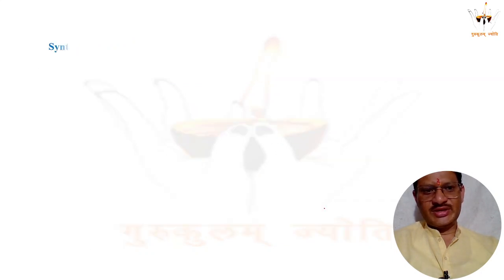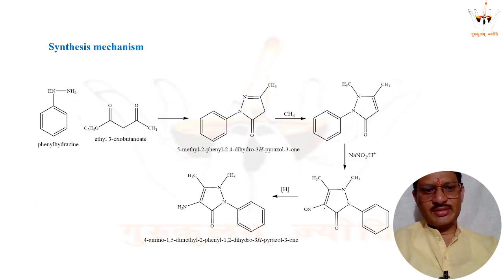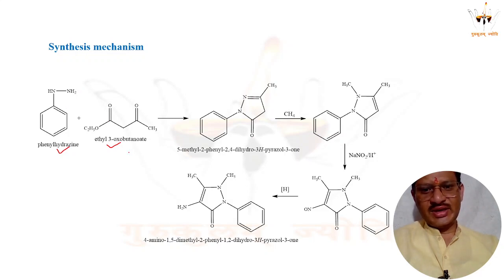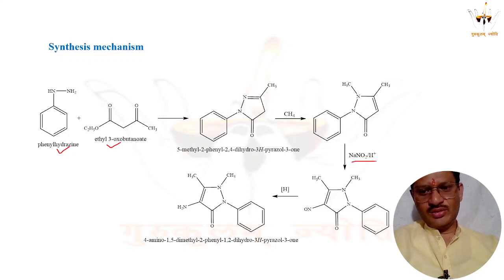Now we will synthesize metamizole. For the synthesis, the first step requires formation of a pyrazoline ring. Two nitrogen-containing reactants undergo cyclization reactions, with the two nitrogen atoms reacting to form a cyclic product in the form of a pyrazole ring.